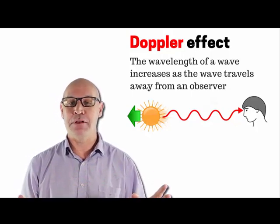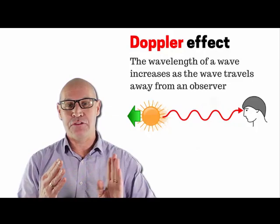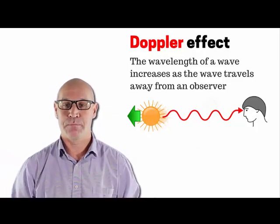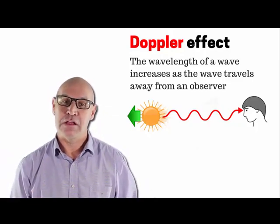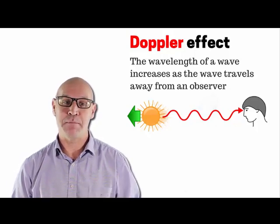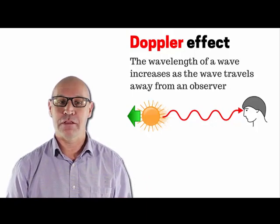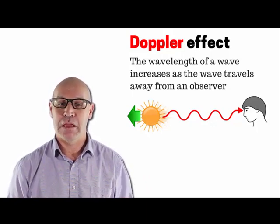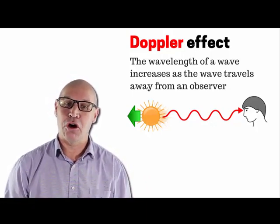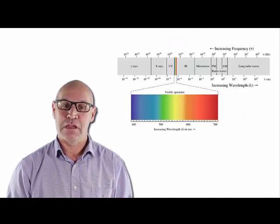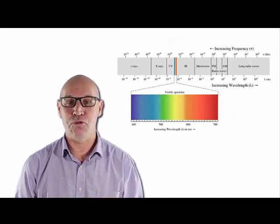Think about that ambulance that passes you, and the siren gets deeper as it goes further away. With light waves, the colour shifts towards the red part of the spectrum, because red has a longer wavelength than blue. Even if light is not in the visible spectrum, the increase in wavelength is still called redshift.